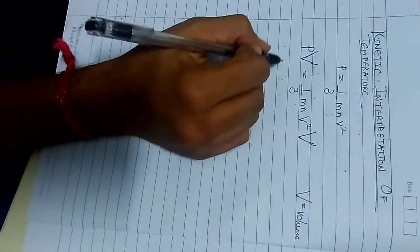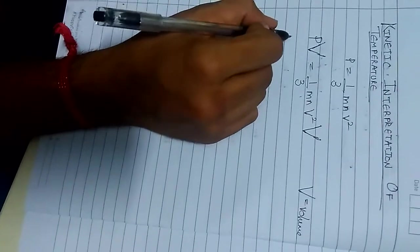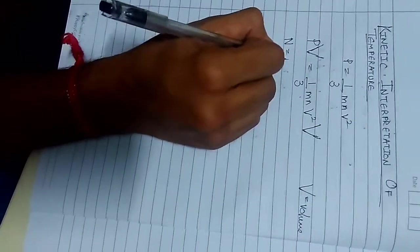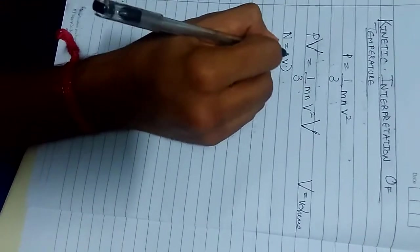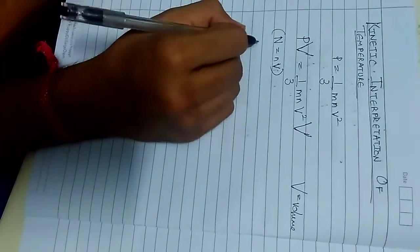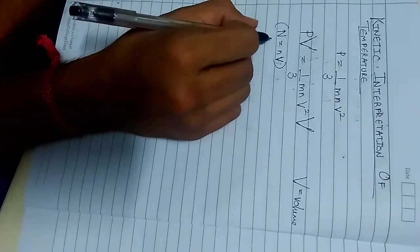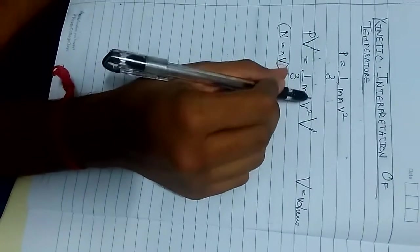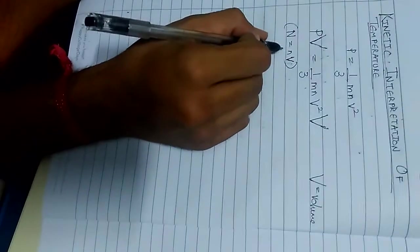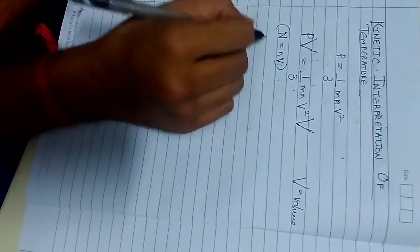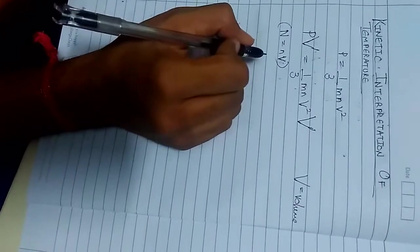After multiplying volume on both the sides we know that n is equal to n v. That is the total number of molecules present in the gas is equal to integral multiple of the volume which is denoted by n.